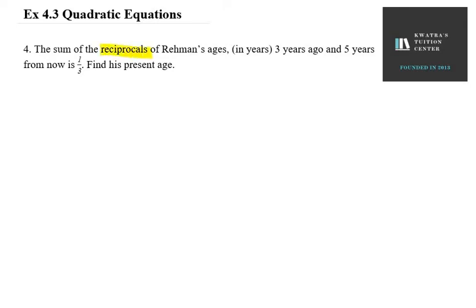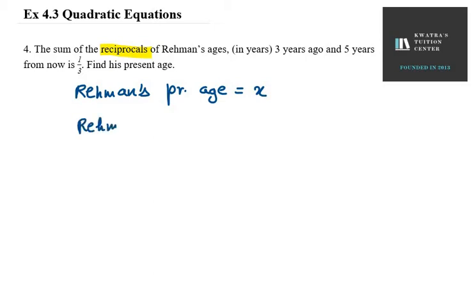The sum of the reciprocals of Raman's age. So Raman's present age, we have to take X. First, we will write Raman's present age as X. Now, age of Raman 3 years ago — Raman's age 3 years ago will be X minus 3.